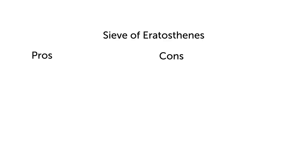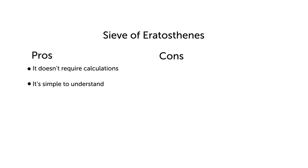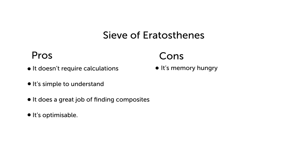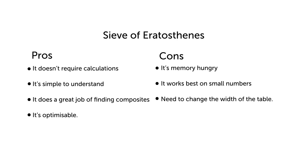It is, though, a really easy way of teaching people about prime numbers. To recap, the Sieve of Eratosthenes has pros and cons. It doesn't require any calculations, it's simple to understand, it does a great job of finding composites, and it's optimisable. But it's also memory-hungry, it works best on small numbers, and to get the most out of it, you need to find a way of changing the dimensions of the table.